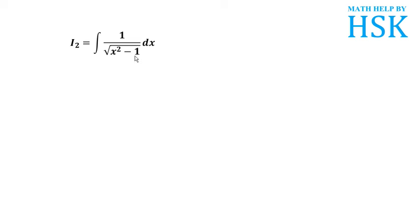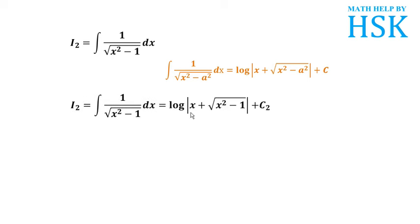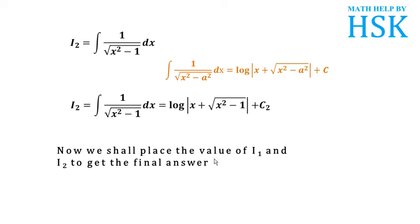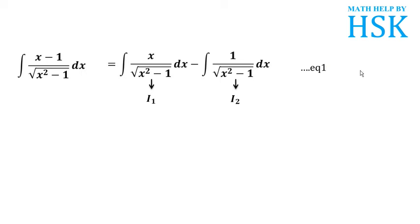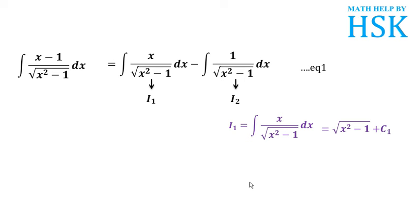I2 equals the integral of 1 upon under root of (x squared minus 1). We know that the integration of 1 upon under root of (x squared minus a squared) equals log of (x plus under root of (x squared minus a squared)). So i2 equals log of (x plus under root of (x squared minus 1)) plus c2.